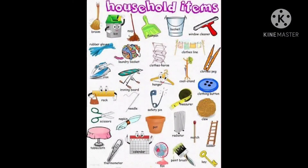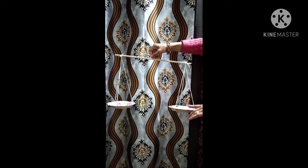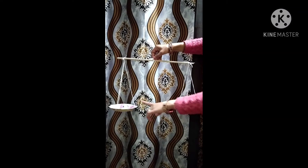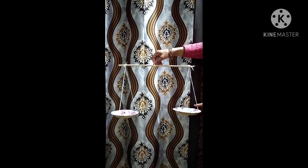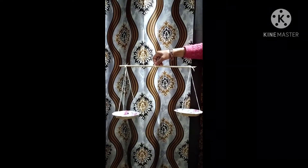Let's see some examples. Now look here — it is a pan balance and it has two pans. Now we will take help of this pan balance to measure the weight of different objects.